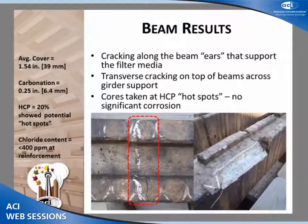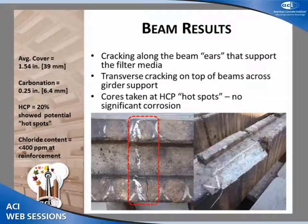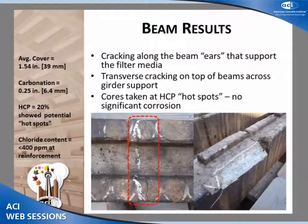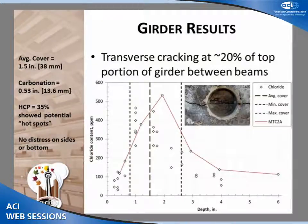For the beams, similar to the other trickling filter, we had cracking along the beam ears and some spalled-off ears. We had some transverse cracking on top of the girder supports from restrained movement. Cores taken at the hot spots showed no ongoing corrosion, and the chloride content was below the threshold at the level of reinforcement. Cover and carbonation depth were good. Other than discrete crack locations or the condition of the ears, there were no real issues with the beams.